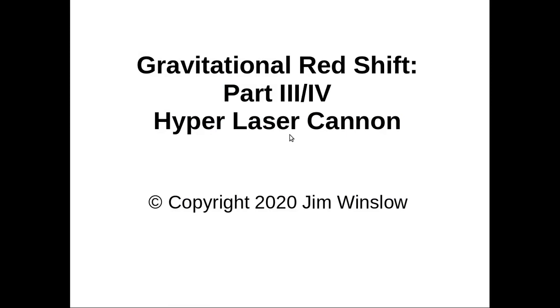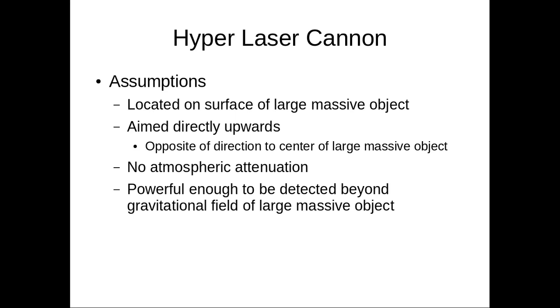Welcome to part three of our gravitational redshift theory. We're going to talk about the hyper laser cannon assumptions: located on the surface of a large massive object, aimed directly upwards opposite direction to the center, no atmospheric attenuation, powerful enough to be detected beyond the gravitational field of the large massive object.